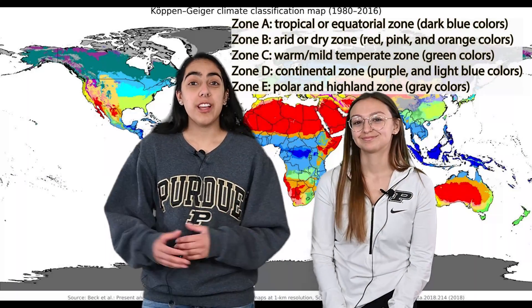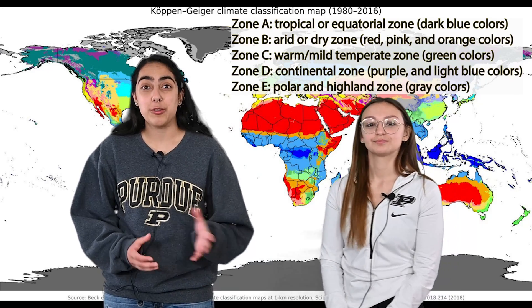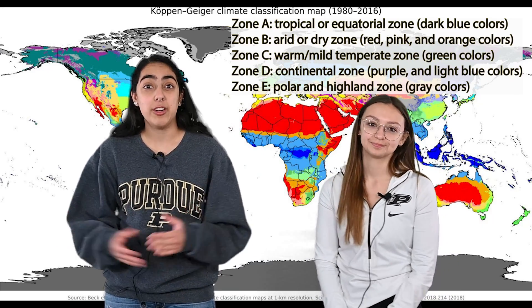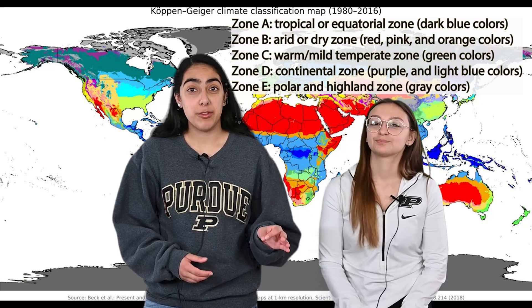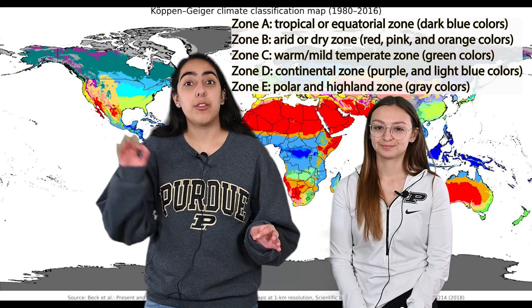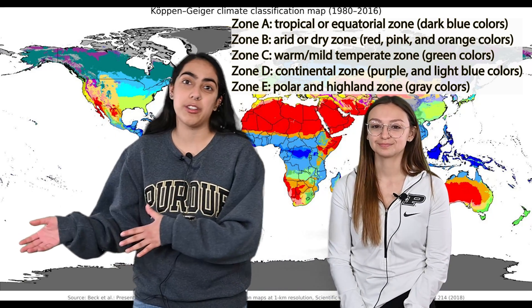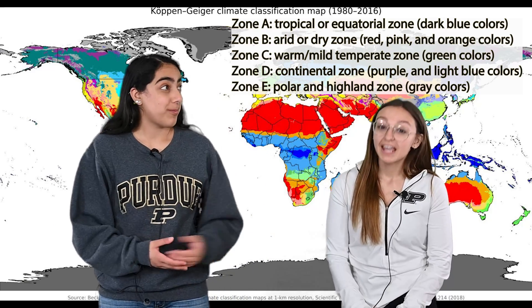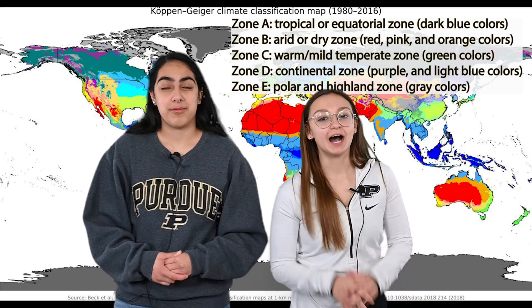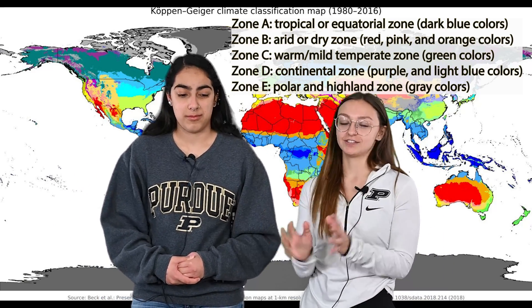The Earth is actually divided up into different zones based on the climatological history of that area. For instance, tropical areas are going to be in a different zone than the warm areas, which are going to be in a different zone than the polar areas, which are super cold. Here in Indiana at Purdue, we are in the continental zone. What zone do you live in?